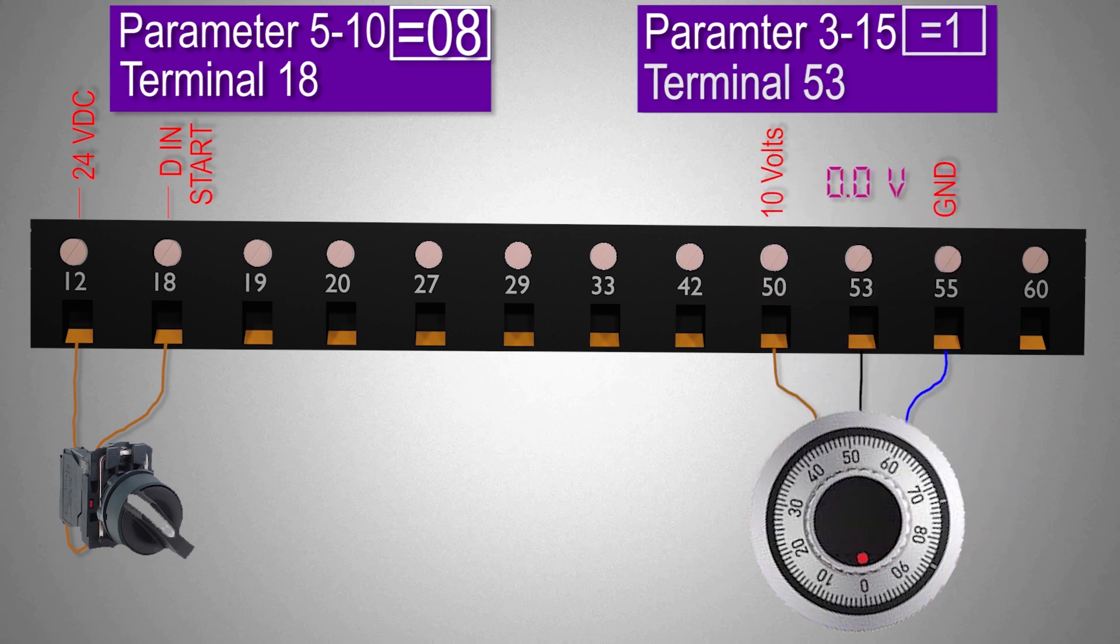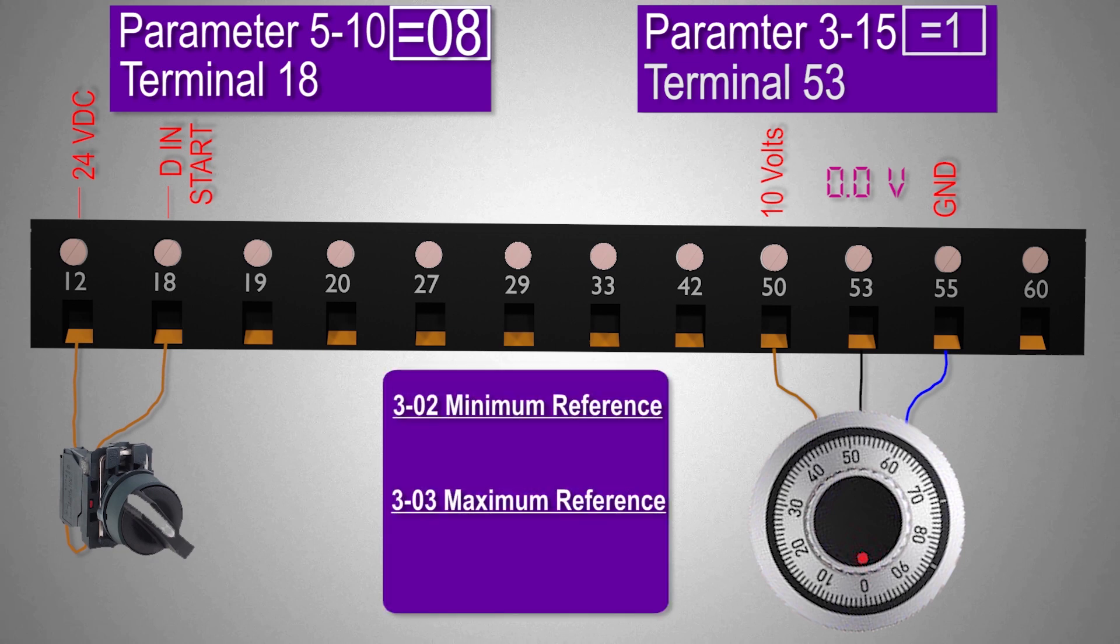There are two other parameters which I want to discuss here are the minimum and the maximum reference which are 3-2 and 3-3 parameters. These two parameters define the minimum speed of the motor at 0 volt analog input signal and maximum speed at 10 volts analog input signal.